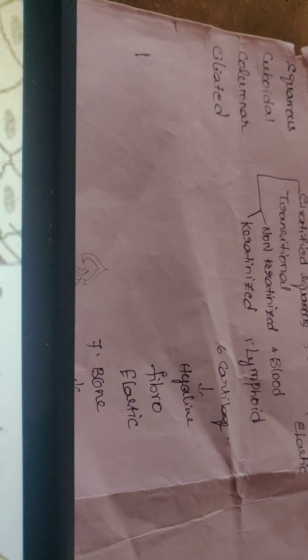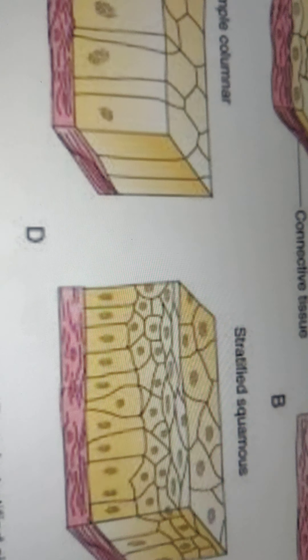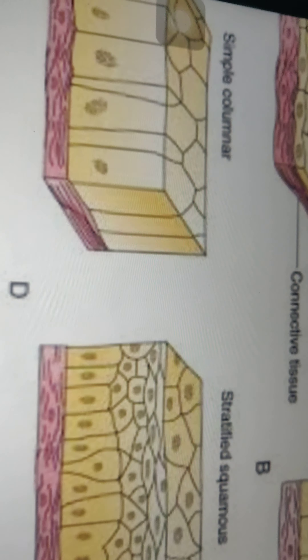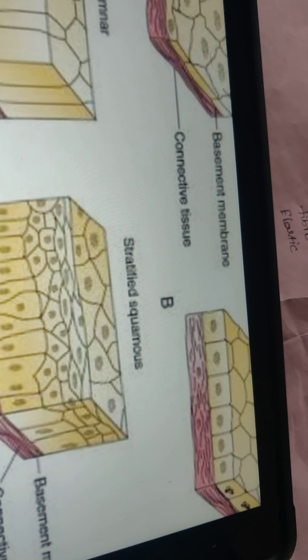In stratified squamous epithelium we have two types: non-keratinized and keratinized. The non-keratinized stratified squamous epithelium lines the wet regions of the body — regions that should always remain moist — such as the conjunctiva of the eye, the lining of the mouth, pharynx, esophagus, and vagina.